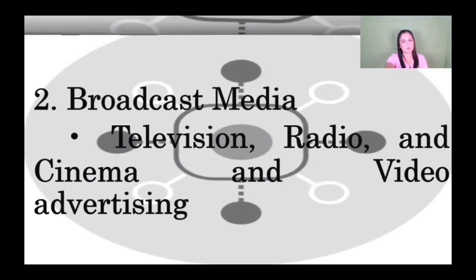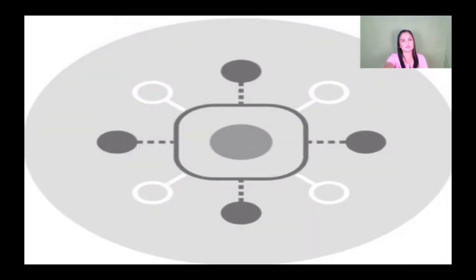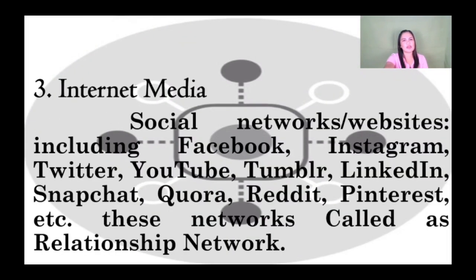For the third, we have internet media. There are many forms of internet media. These are social networks or websites, including Facebook, Instagram, Twitter, YouTube, Tumblr, LinkedIn, Snapchat, Cara, Reddit, Pinterest, and many more. These networks are called Relationship Networks.